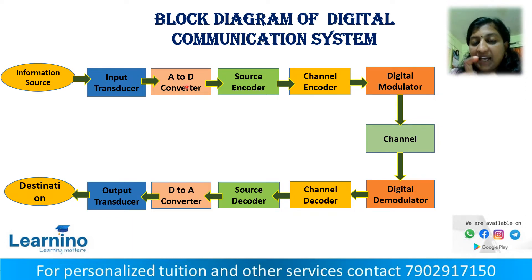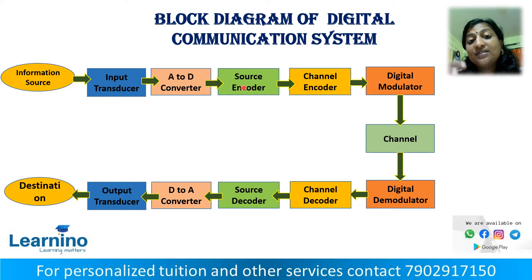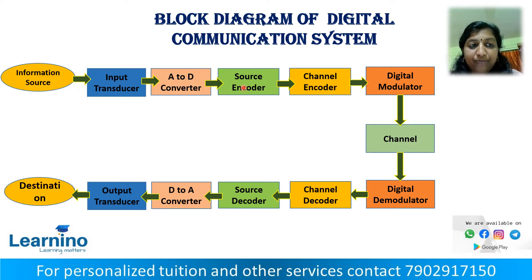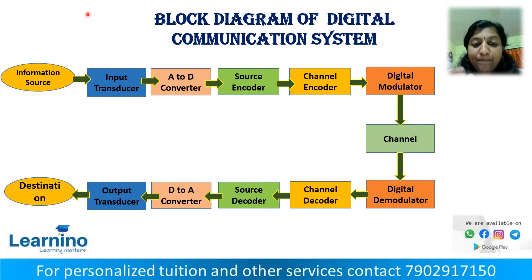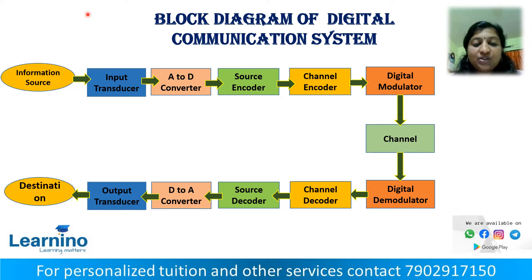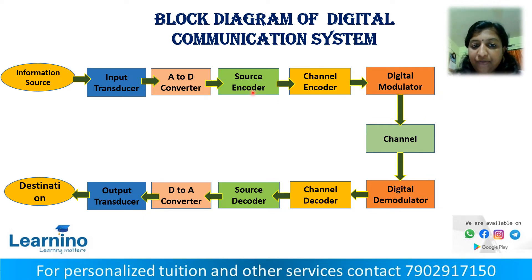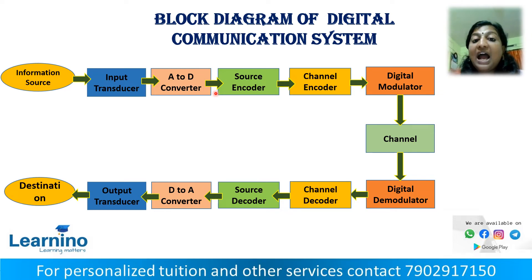After the ADC, we have a source encoder. The source encoder compresses the number of bits from the analog-to-digital conversion. This compression reduces the bandwidth and maximizes its utilization by compressing the bits. So the source encoder takes the binary sequence from the analog-to-digital conversion and compresses it.